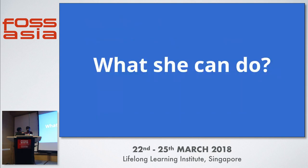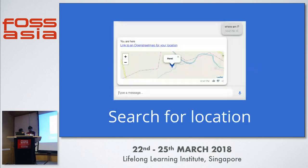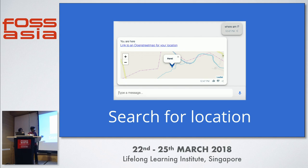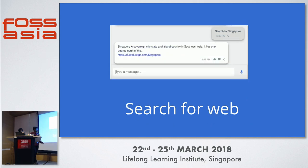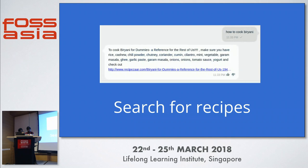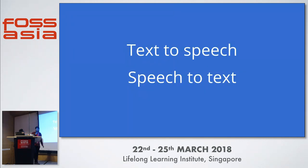SUSI can do a lot of things. If you are lost, it can search locations for you — just say 'Where am I?' or 'Where is London?' and it will give you an OpenStreetMap link. It can also act as a search engine for towns and give you the required information. If you're feeling hungry, SUSI won't cook food for you, but it will give you the recipe. If you're feeling lazy, you can use the text-to-speech and speech-to-text features and chat with SUSI using voice commands.